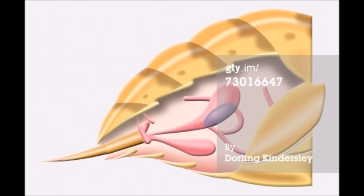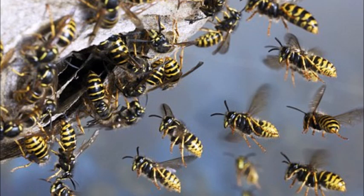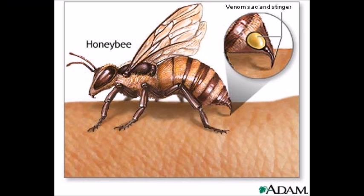With wasp venom, the pain — which can be very intense — is an exaggeration of the actual physical damage. The sting enables the wasp to convince larger threats that it is capable of dishing out far more physical damage than one would expect from a creature so small. Wasp venom achieves this effect by waging a staged attack against the nervous system on a cellular level.